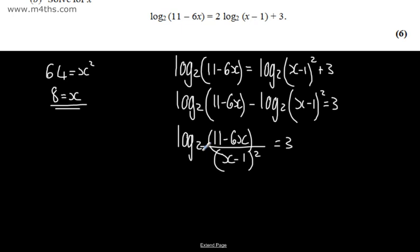Rewriting the exponential equivalent, we can say that 11 minus 6x over the quantity x minus 1 all squared is equal to 2 to the power of 3.